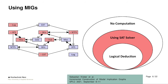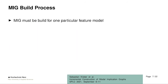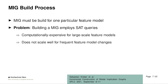So what's the problem with this new data structure? The problem is that we have to build it first to use it. To build a Modal Implication Graph for one particular feature model, you again have to employ sub-queries, which don't scale well for large feature models, especially for feature models with complex constraints.